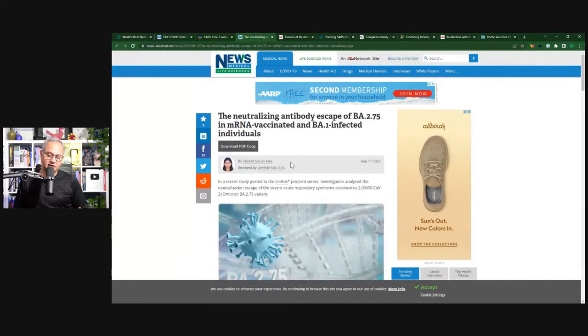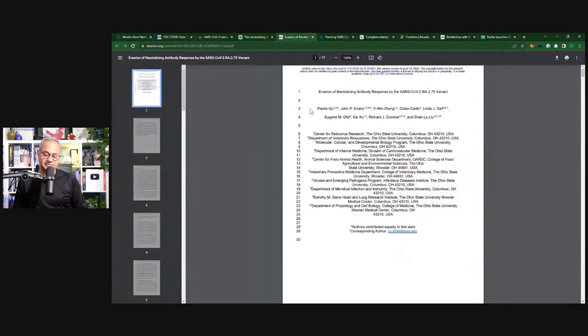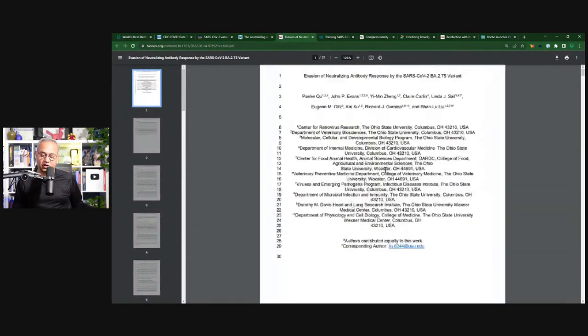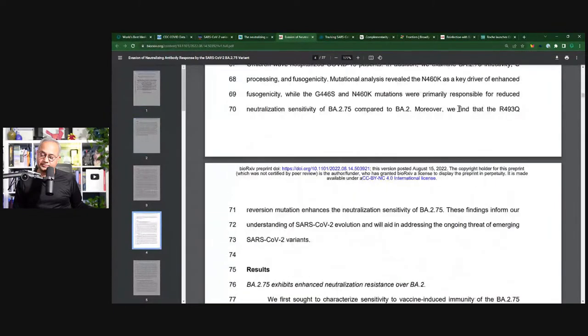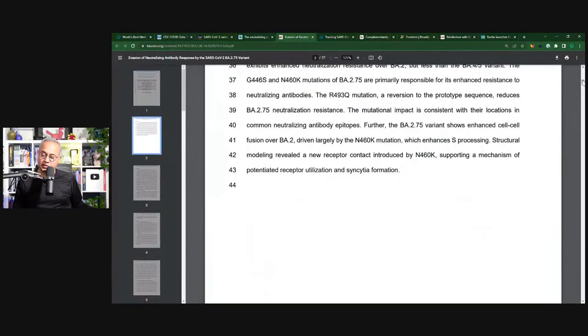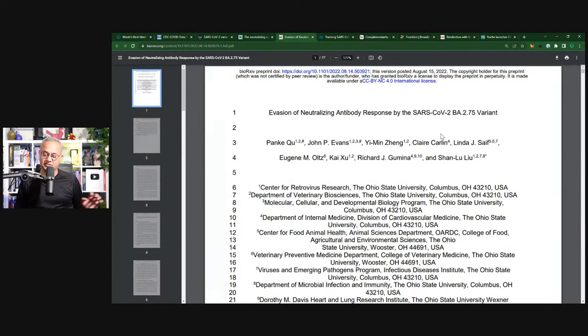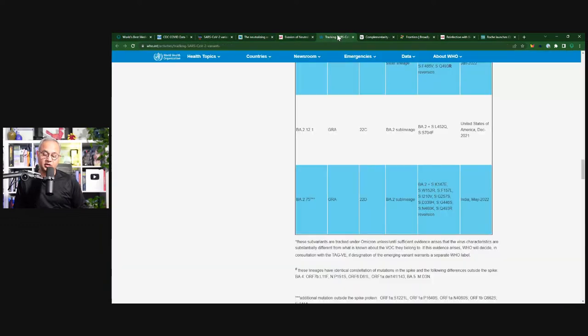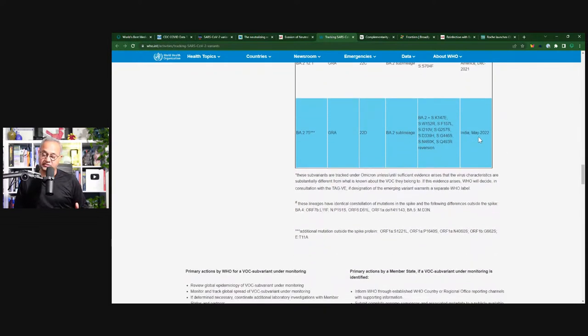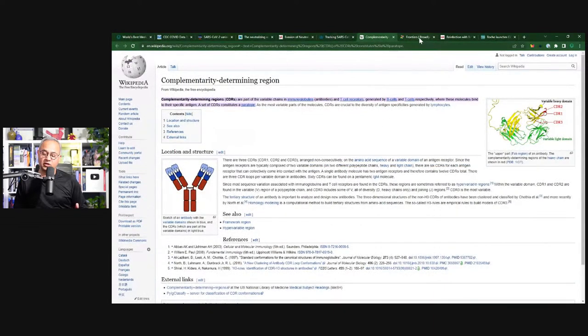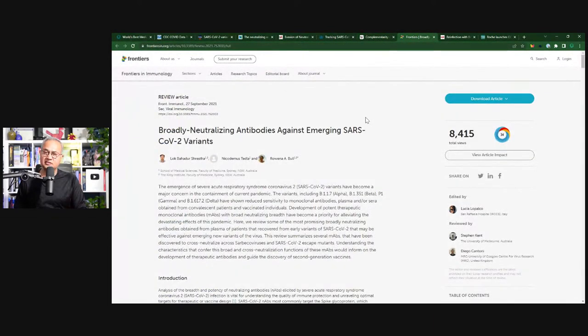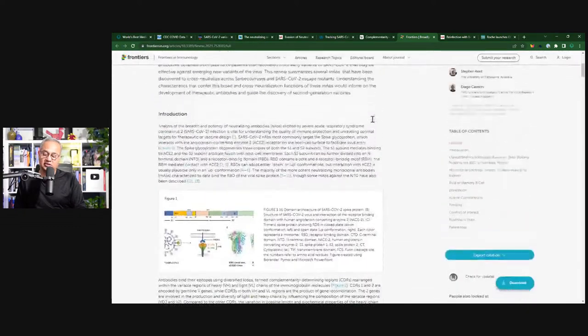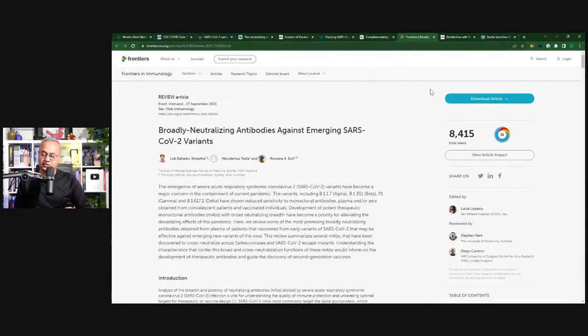This is the article, if you would like to read, all these links are in the description of this video. This is the study, Evasion of Neutralizing Antibody Response by the SARS-CoV-2 BA.2.75. Then this is WHO talking about BA.2.75, and that is India, May 2022.